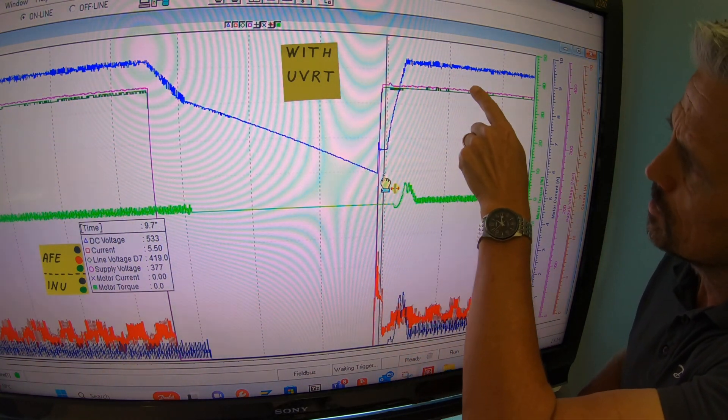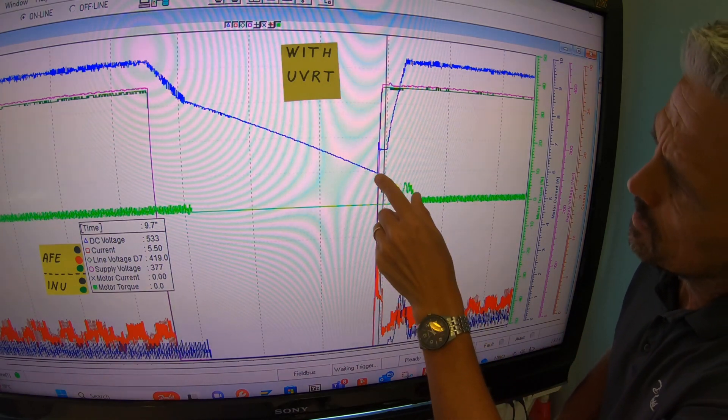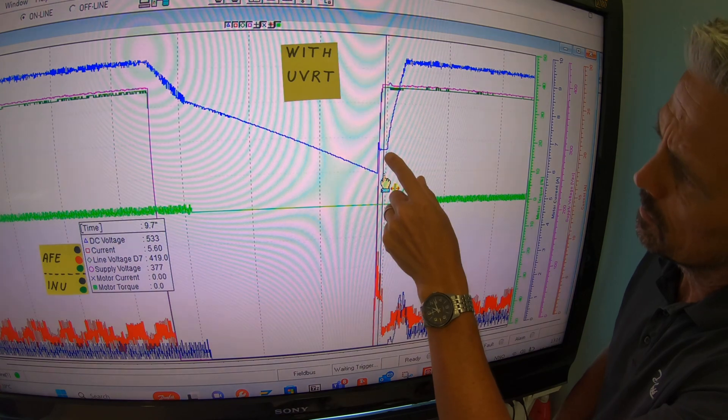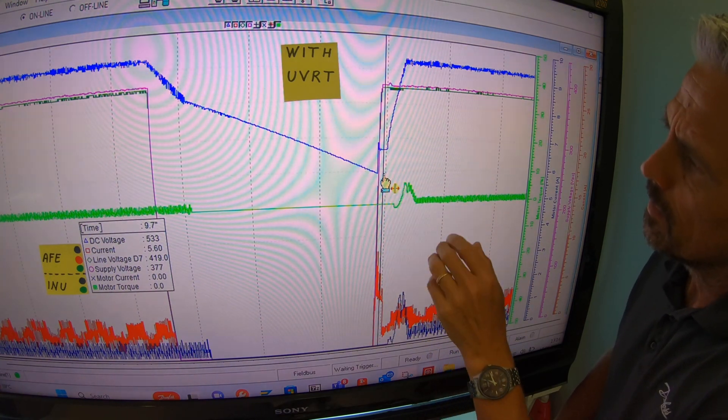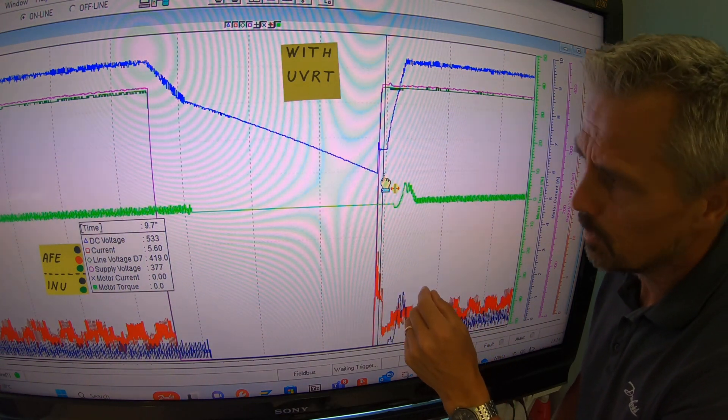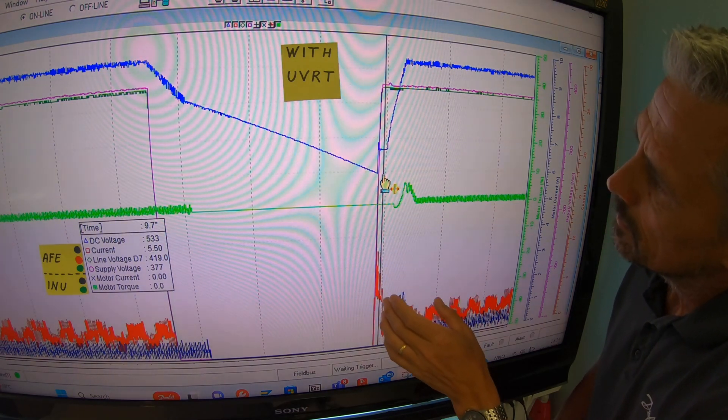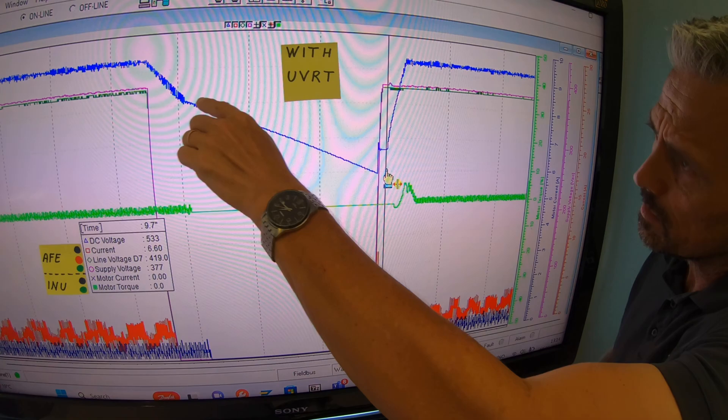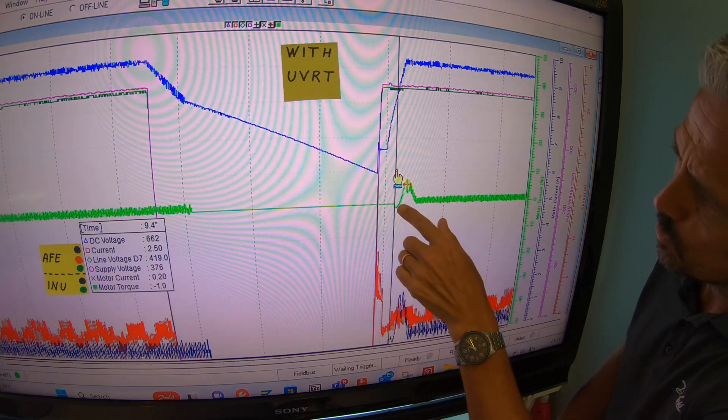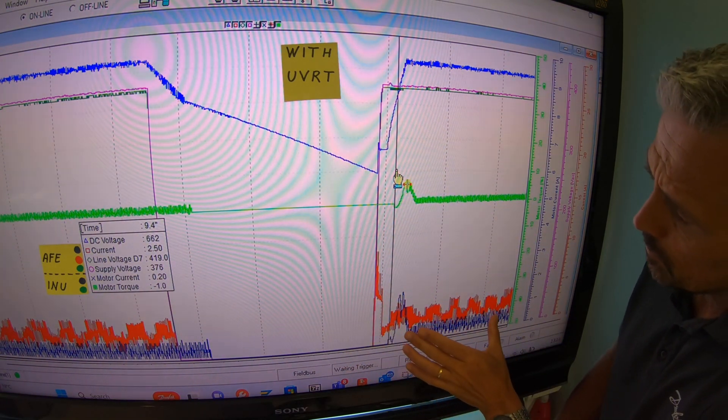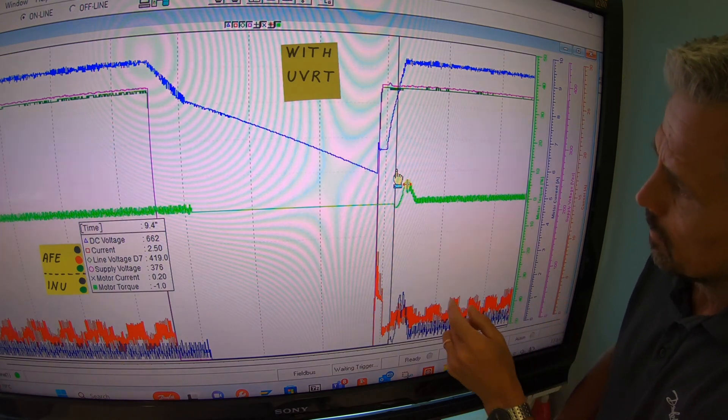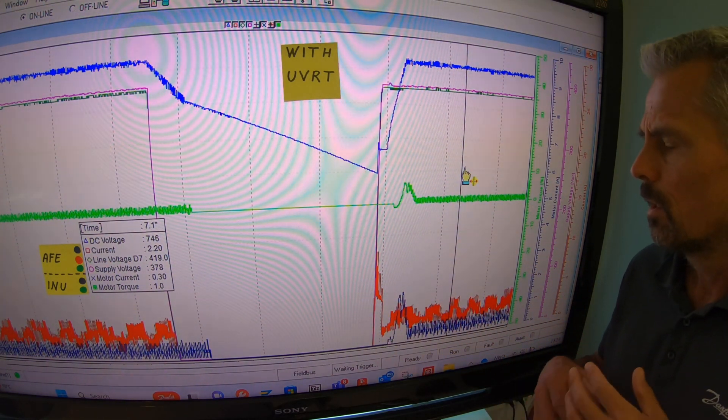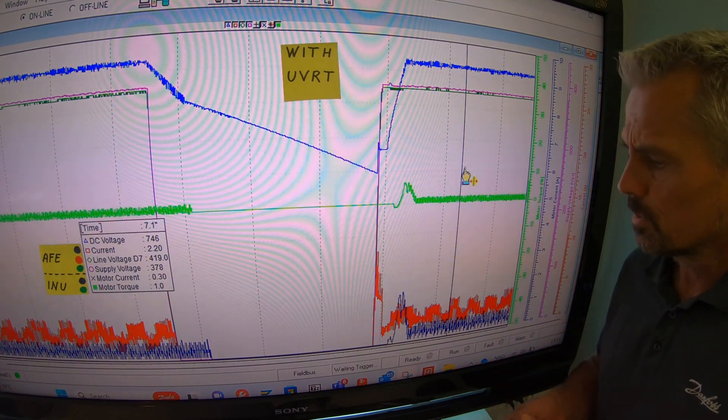Here the AC ship grid is restored. First thing happening is the pre-charge and the freewheeling diodes. They take the voltage up to this level. Then after a pre-defined front parameter time delay, then the active frontend starts producing the DC link. At 650 volt, consumer kicks in back. Now the ship propeller is pulling a current, a torque, and the ship is back into full operation of critical function.